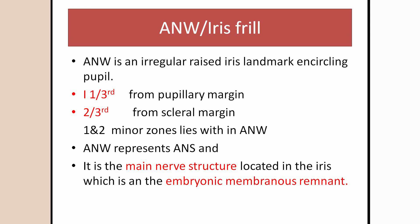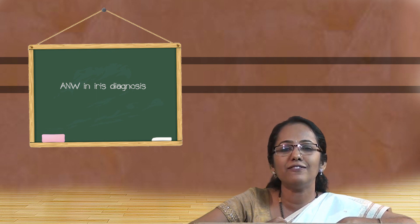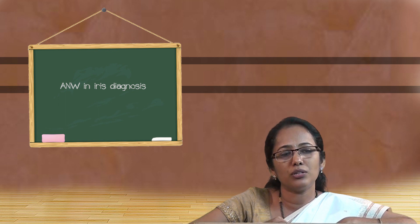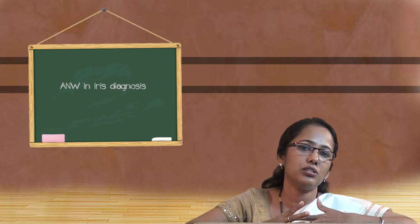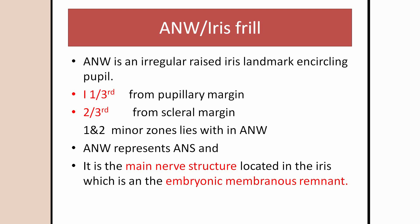The position of the autonomic nerve wreath is one third away from the pupillary margin — the outer border of the pupil — and two thirds from the scleral margin, which is the area where the iris meets the sclera. Different zones are represented in the iris. The first and second minor zones — the stomach area and intestinal area — fall within the autonomic nerve wreath. The autonomic nerve wreath represents the autonomic nervous system in our body, which consists of sympathetic and parasympathetic nervous groups that control the auto-regulation of most involuntary functions.